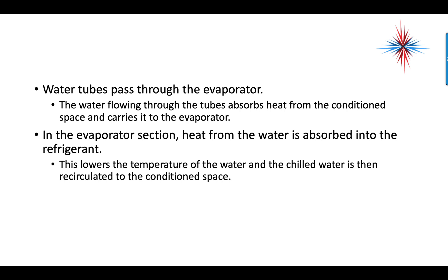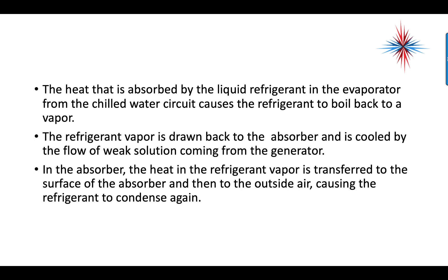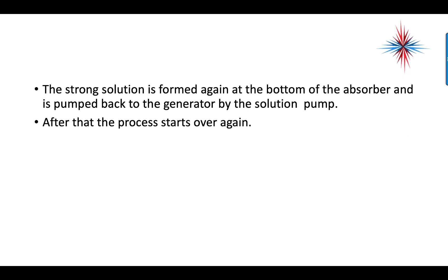This lowers the temperature of the water, and the chilled water is then recirculated to the conditioned space. The air handlers in the conditioned space don't have refrigerant in direct contact — it's not a direct expansion system. It is a chiller, so you have water in the coils. The heat absorbed by the liquid refrigerant causes it to boil back to a vapor. The refrigerant vapor is drawn back to the absorber, cooled by the weak solution from the generator. The strong solution forms again at the bottom of the absorber and is pumped back to the generator.